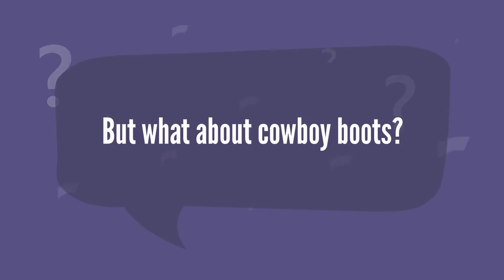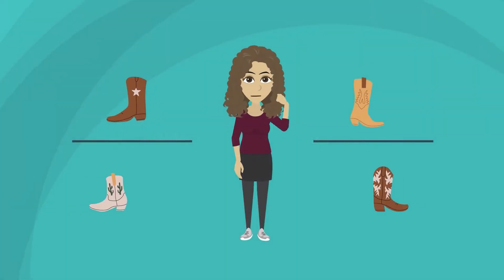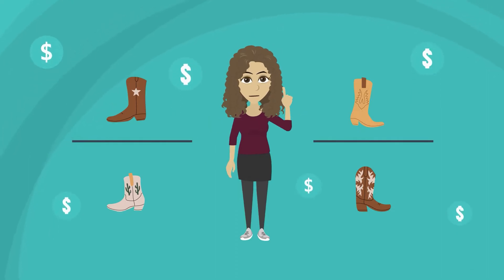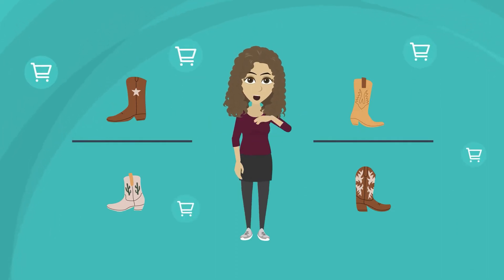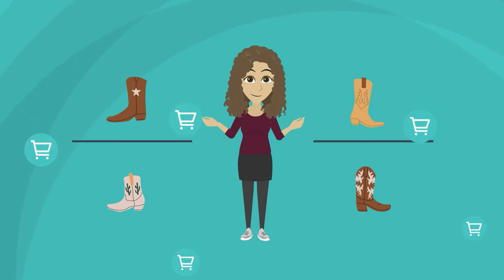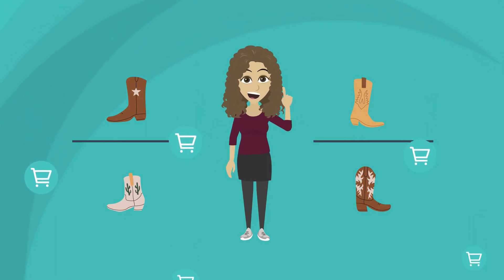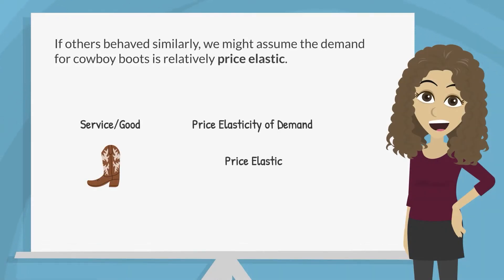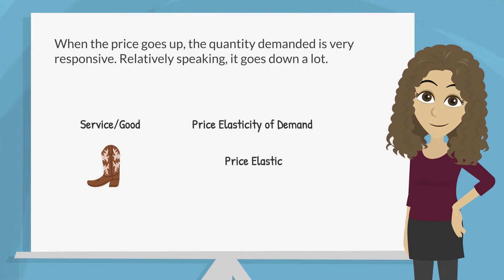But what about cowboy boots? For me, cowboy boots are not a necessity. So if the price of cowboy boots were to rise, the quantity I demand would fall — in fact, my quantity demanded would fall a lot. If others behaved similarly, we might assume the demand for cowboy boots is relatively price elastic. When the price goes up, the quantity demanded is very responsive — relatively speaking, it goes down a lot.